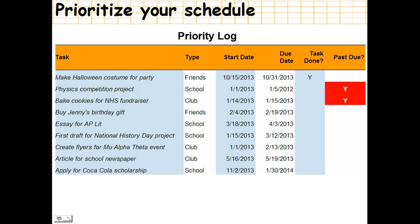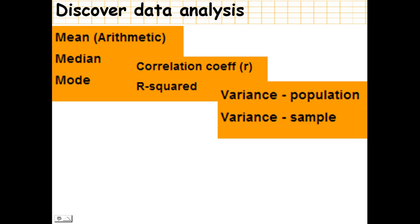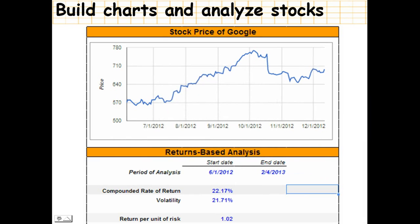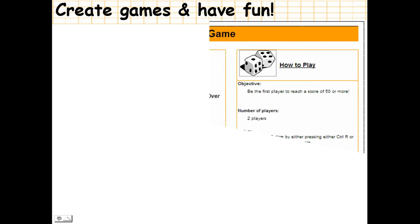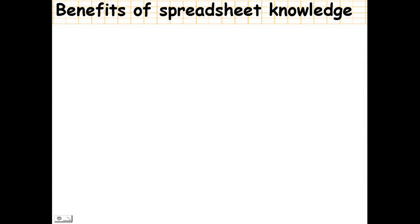We can prioritize our schedule by building a priority log. We can discover data analysis, calculating the mean, median, mode, correlation coefficient, R-squared, variance, and a batting average — all with a spreadsheet. We can build charts and analyze stocks such as the stock price of Google, and we can create games like our own dice game shown here.